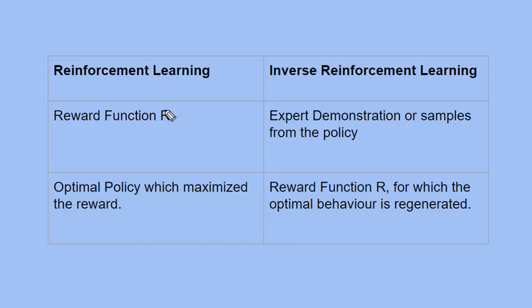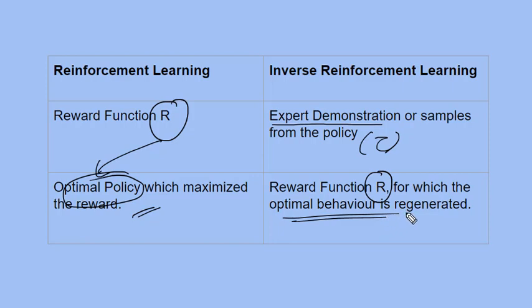In reinforcement learning, we already have a reward function and we get the optimal policy as the end result, while in inverse reinforcement learning we have expert demonstrations or samples from test trajectories and we get the reward function at the end for which the optimal behavior can be regenerated or explained.